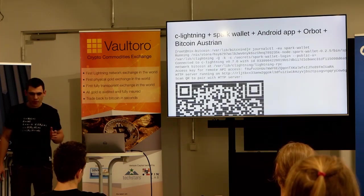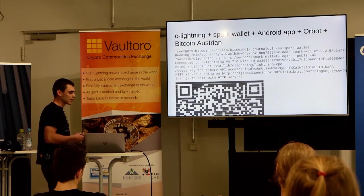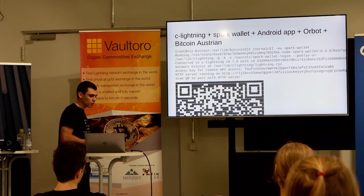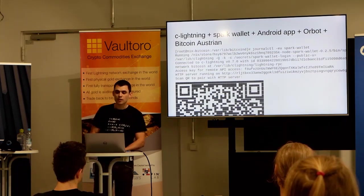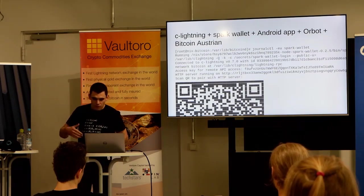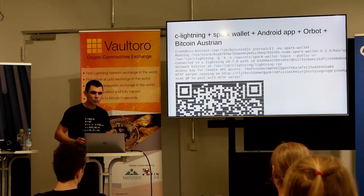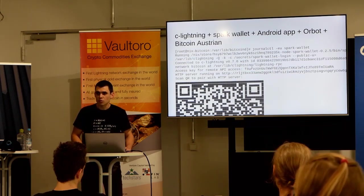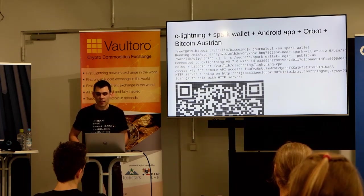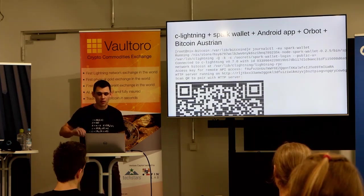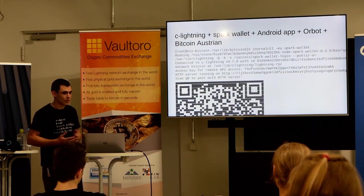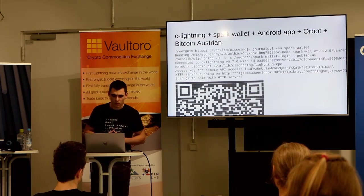One thing you can do with it is control your CLightning node using a mobile app. For that you just need to enable the Spark Wallet software on the NixBitcoin machine in the configuration. You download the Android app, the Spark Wallet app. You use Orbot — an app that allows you to use Tor — and configure it such that it always tunnels requests from the Android app through Tor. You do that once just for this app, and then this works. It sounds very janky and fragile, but actually it works really well.